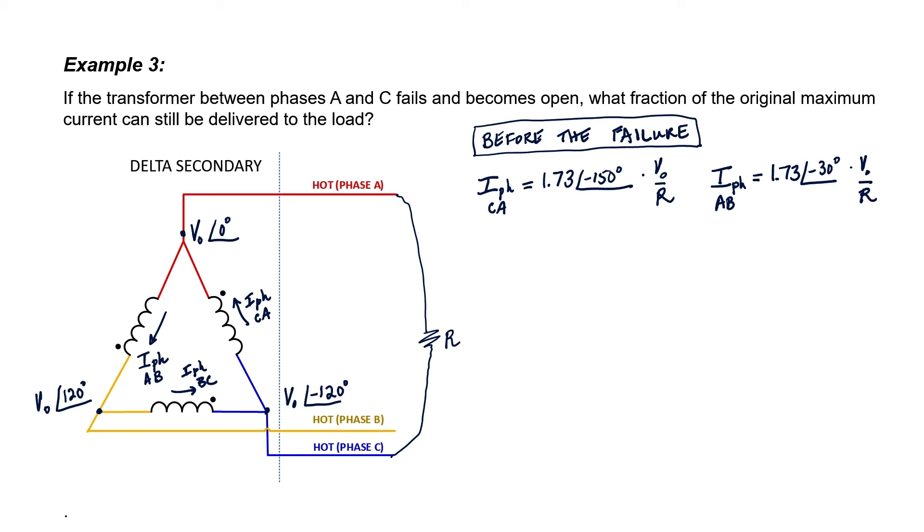I'm going to define the current here coming out through this particular line as I sub L, the line current. I'm also going to assume that we have the same resistive loads connected between all of the phases.